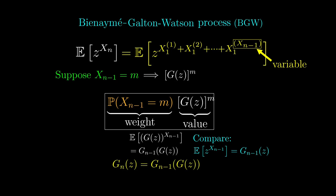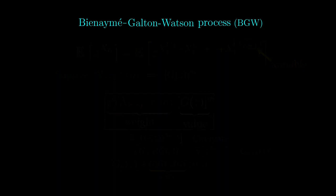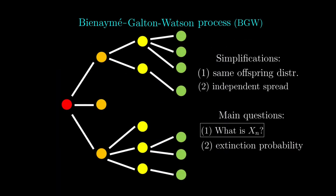And so, we can apply this identity again to get gn-2 of g of g of z. Repeatedly applying this, we get the generating function for xn is just the generating function for x1 iterated n times. This means that we have finally cracked the first question, because given the offspring distribution, we can theoretically work out the distribution of xn by decoding that generating function.